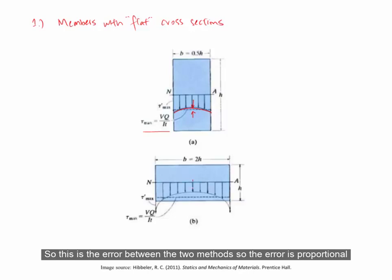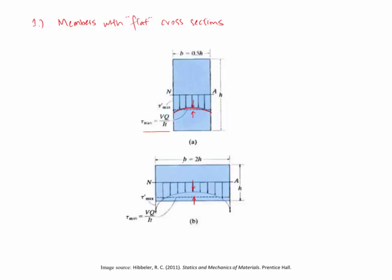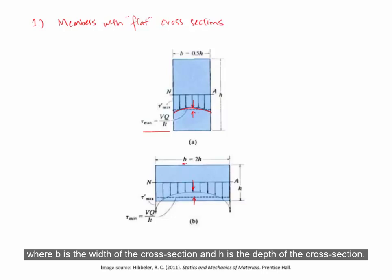This is the error between the two methods. The error is proportional to the width to depth, or b over h ratio, where b is the width of the cross-section and h is the depth of the cross-section.